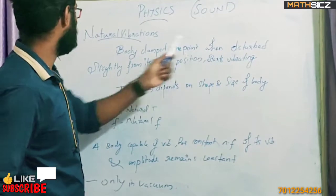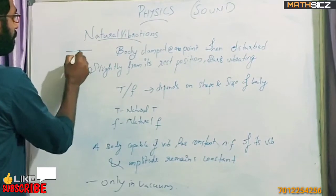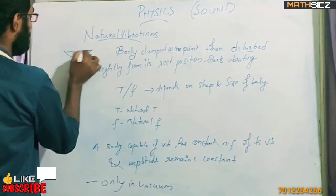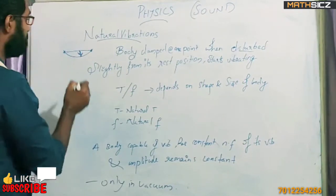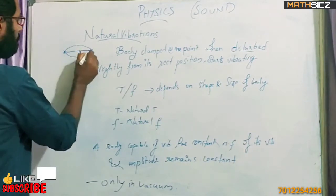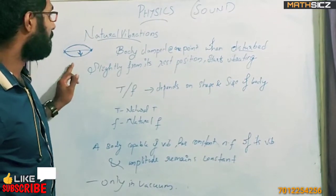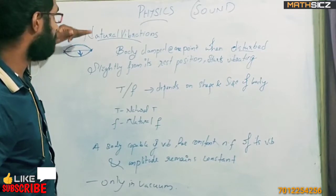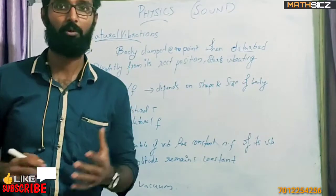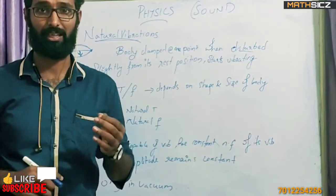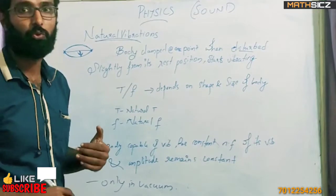The body is clamped at one point. When disturbed slightly from its rest position, it starts vibrating. That means we have to initially create a disturbance. We have to clamp a body at two points, force that body, and disturb it so that body can vibrate. These two extremes can vibrate — that body in the rest position can vibrate. We have to start a vibration, create a disturbance, and it will continue to vibrate. That means natural vibrations.